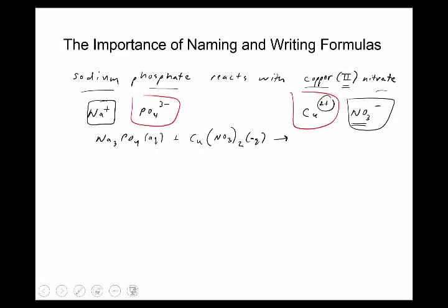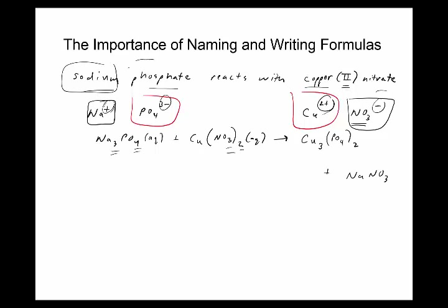That's how you get your products: copper phosphate, which happens to be solid, plus sodium nitrate, which is soluble. If you didn't know the charges you wouldn't know the subscripts, and you wouldn't know the quantities of atoms involved. Getting the charges correctly all stems from the names — a bit of memorization — but it all goes back to knowing the charges, which tells you the quantities of ions when they form compounds.